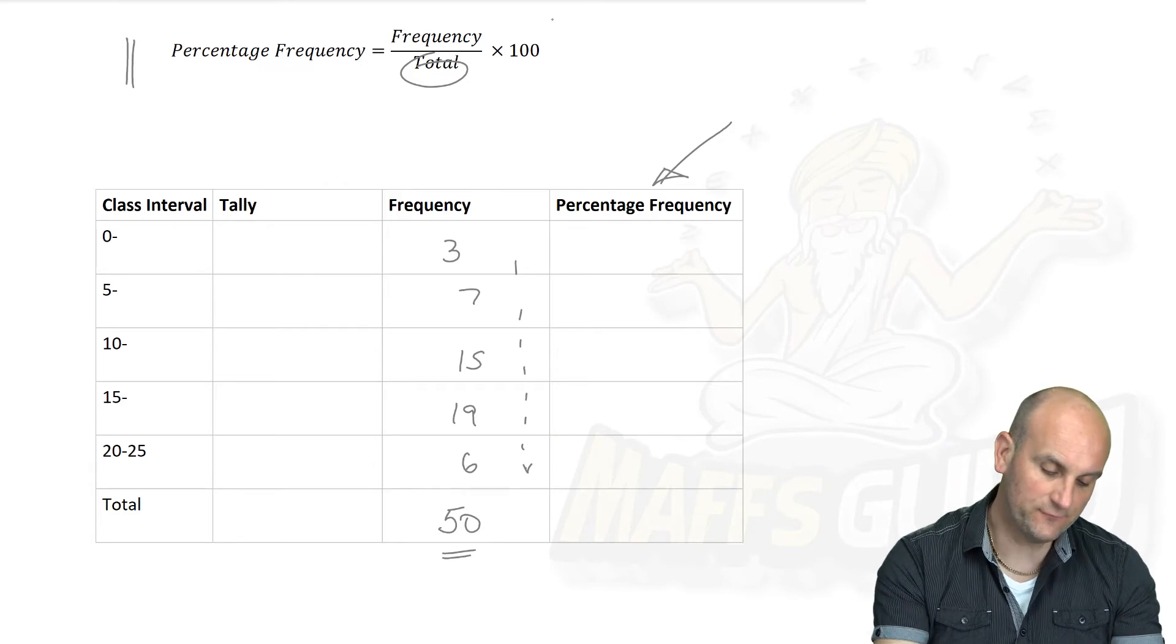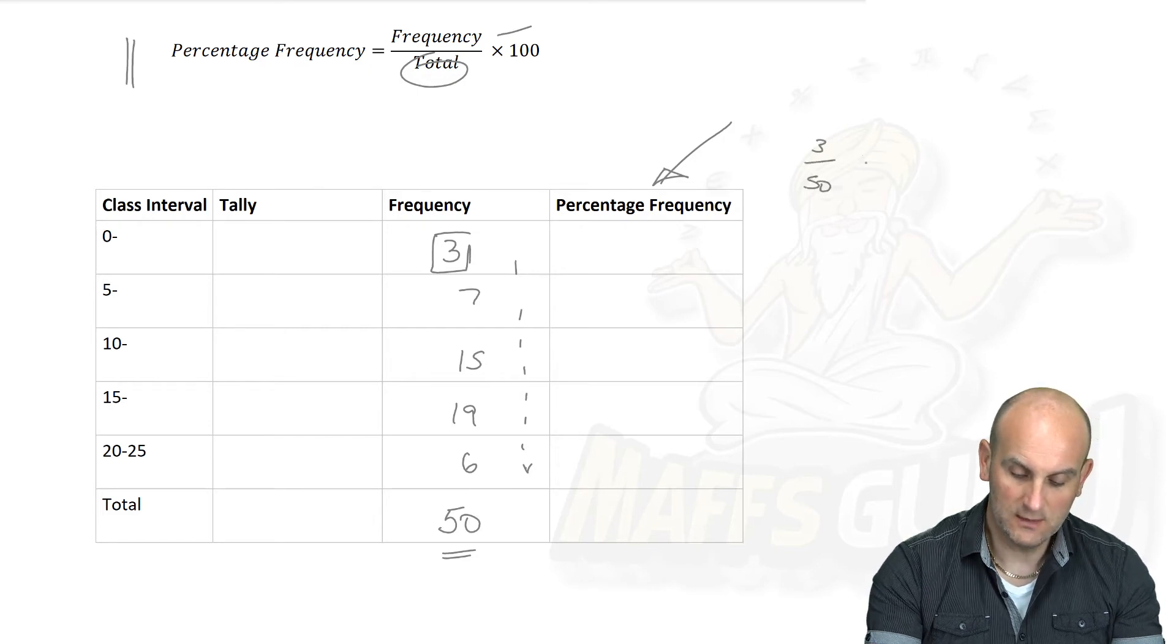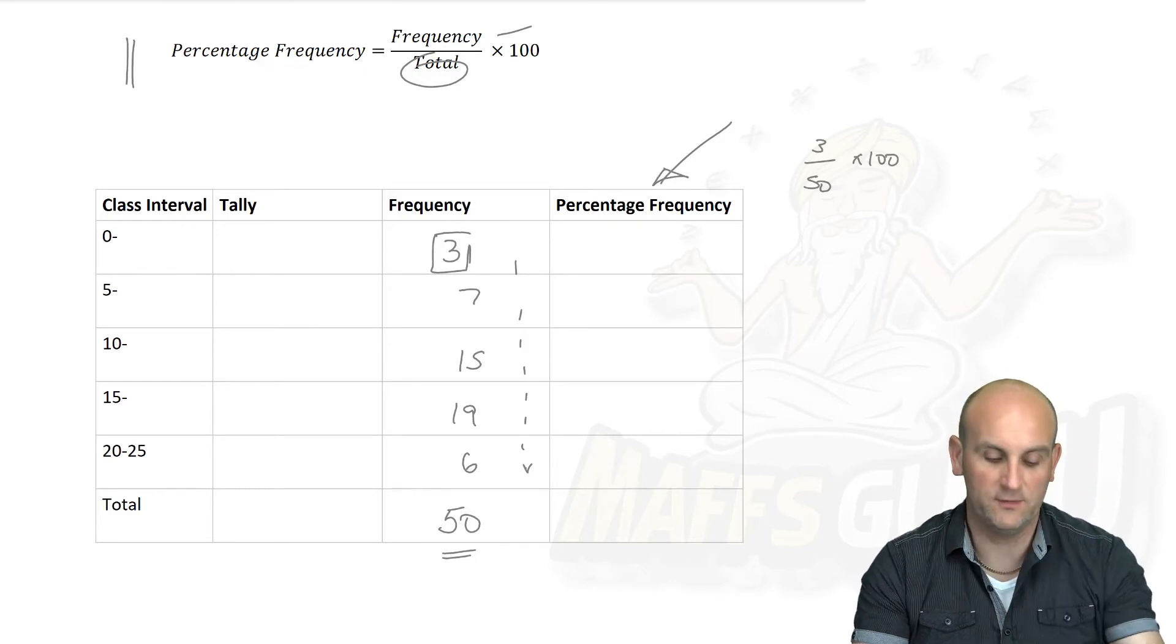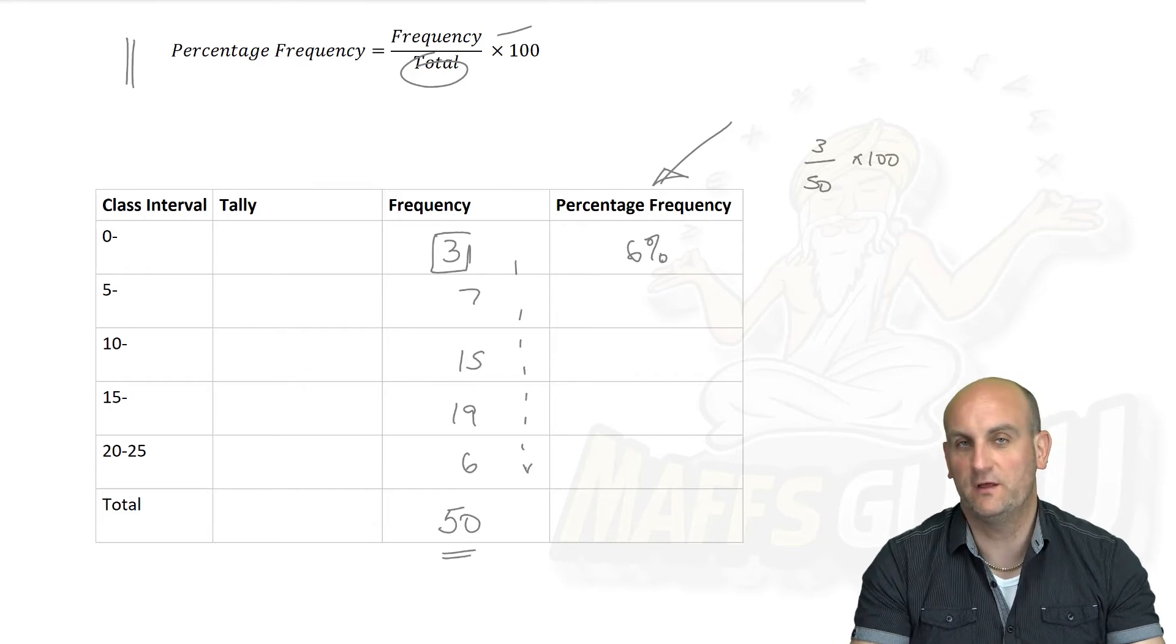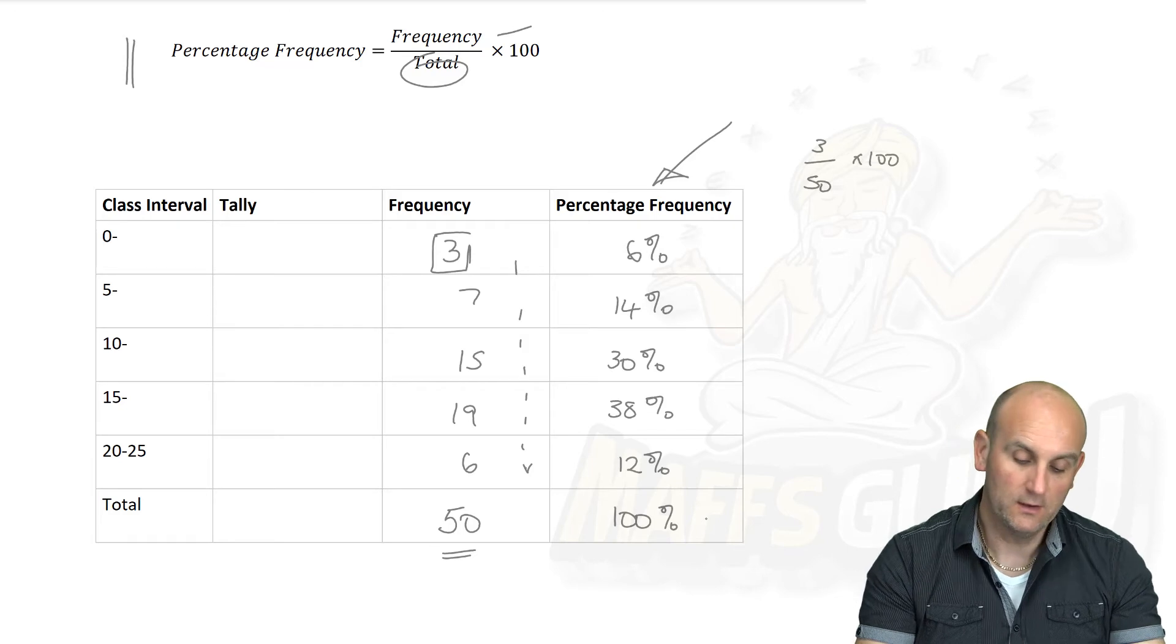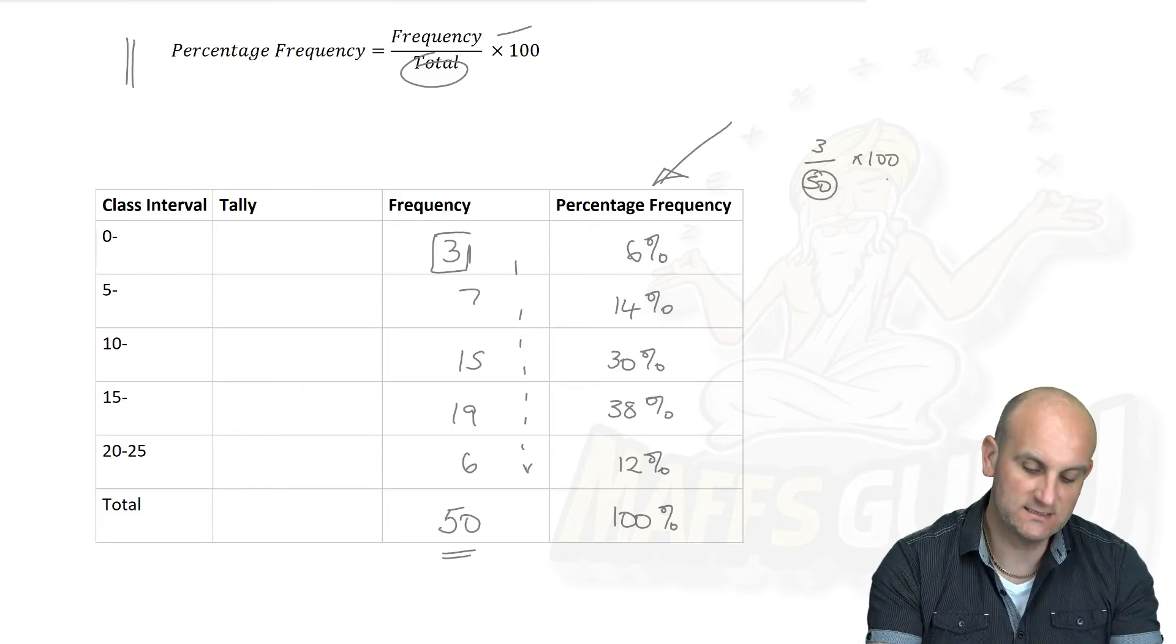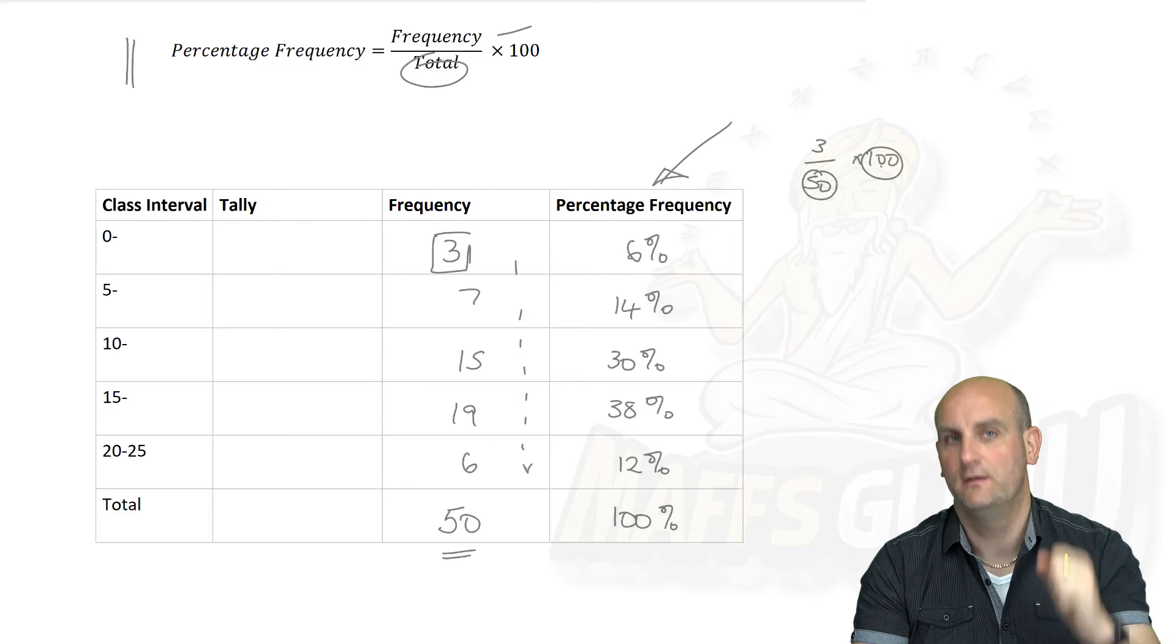Right so percentage frequency says take the frequency. Let's deal with this first number here. Let's take the frequency, divide it by the total and times it by 100. 3 divided by 50 times 100. Now obviously there's many ways of doing this. You can use your calculator. I now know that that is 6%. This one here happens to be 14%, 30%, 38% and 12% which when I add all those together I will guarantee you gives me 100% which is good because that's what we want. My advice to you is if you don't know how to do this use the formula and your calculator.